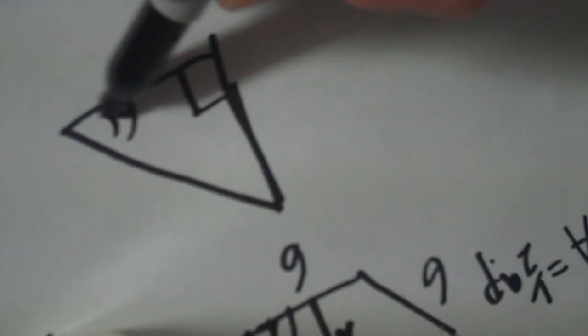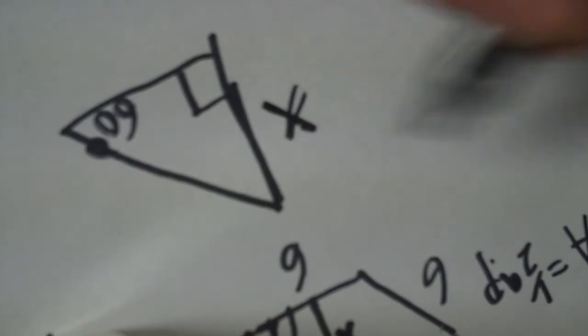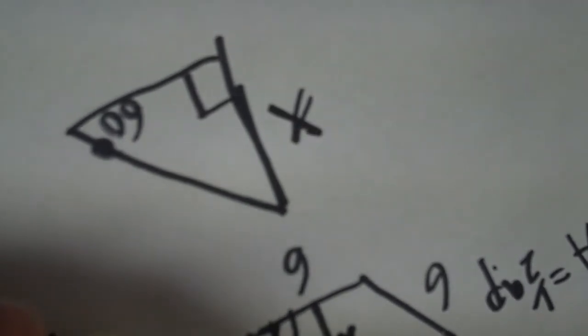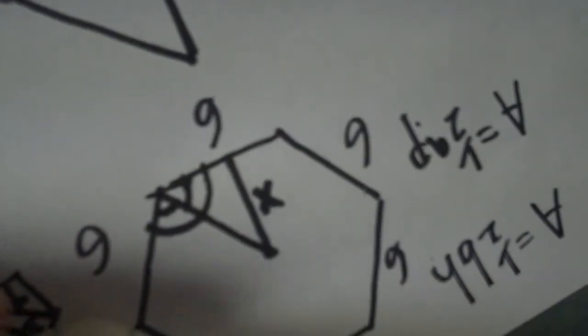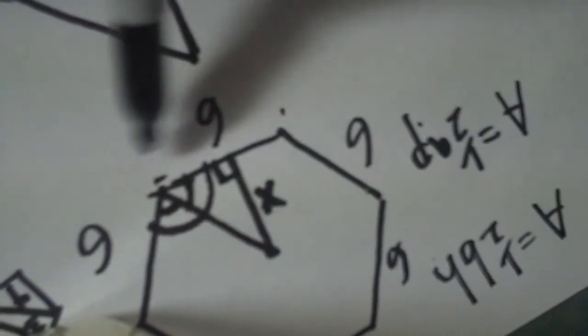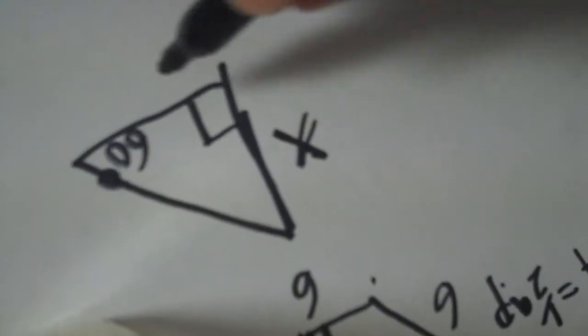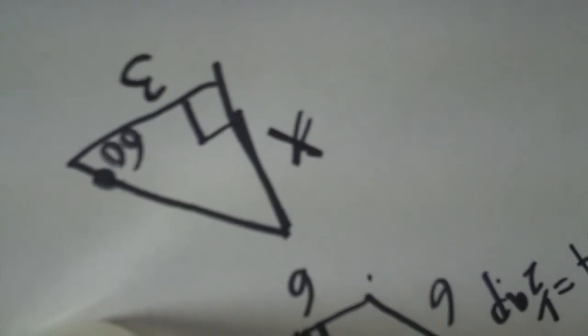So I have 60 degrees here, I'm looking for X, all I would need is another side, and I have the other side. If we go back to the original picture, this line is breaking this side into two equal parts, so since the whole thing is six, that makes my internal side, or my little triangle side, worth three.